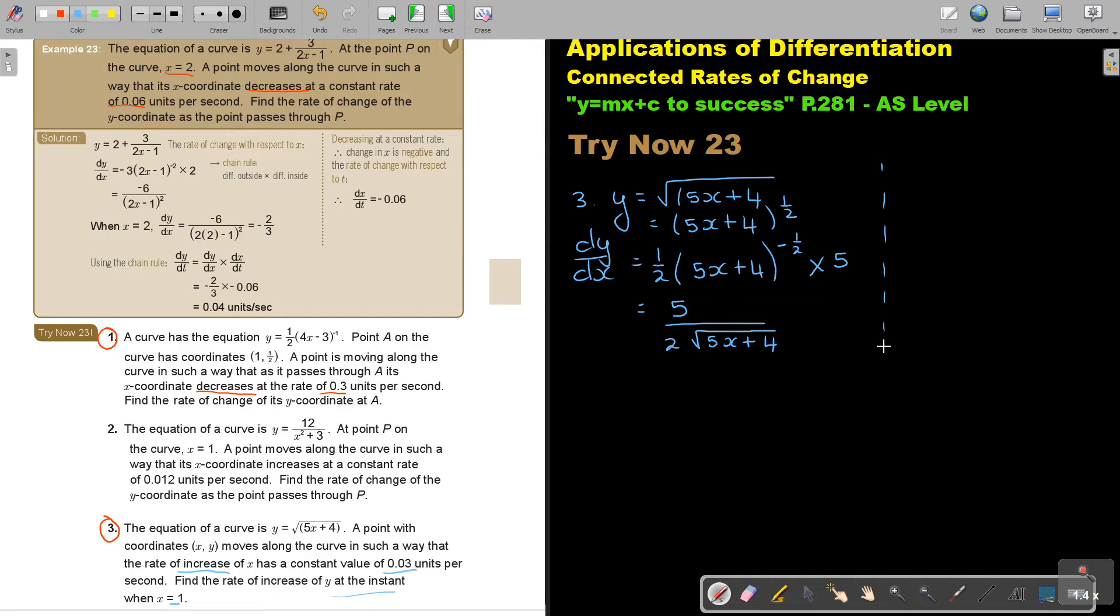Now I can draw the line there. Now, when x is 1, dy by dx is 5 over 2, 5, 1 plus 4 equals 5 over 2. And that's, I know, I do it long. It's not necessary, because that's 3. So it's 5 over 6.